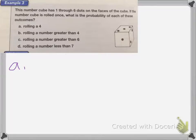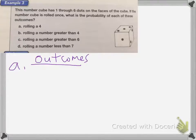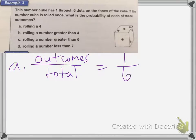We write probabilities as fractions. The top number is how many outcomes there are, and the bottom is your total amount. So for this one, how many fours are there on a dice? There's only one four. And how many numbers are there total? There are six numbers, including the four — it has to include all the numbers. So the probability of rolling a four is one-sixth.